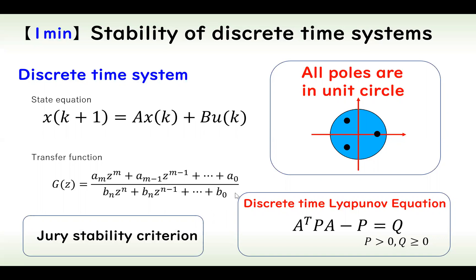In another approach, Jury's stability criterion is known to consider the stability of discrete time systems.